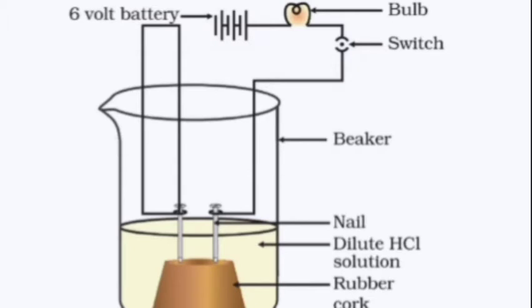To understand this, consider a simple experiment. You have a rubber cork with nails connected to an external circuit that has a bulb and a battery. But here there is no connection, so the circuit is broken and the bulb will not glow — current will not flow.